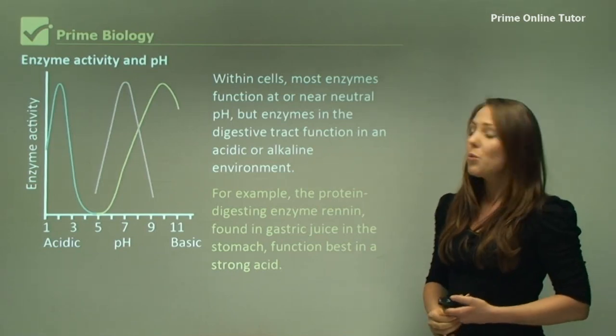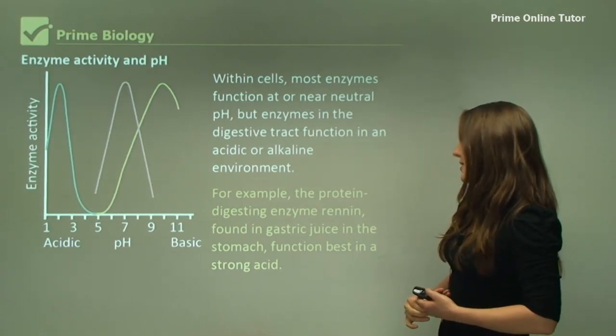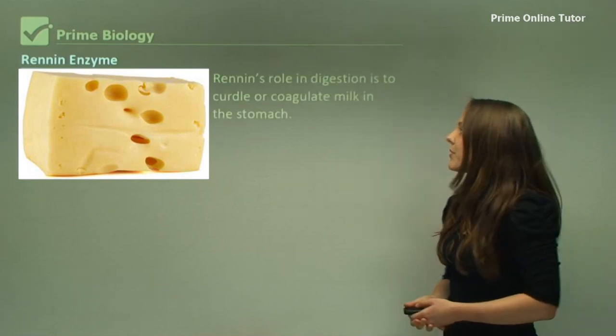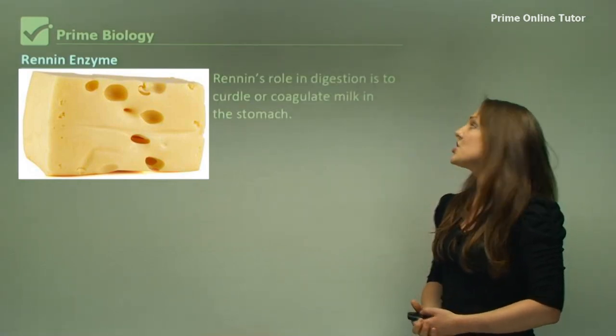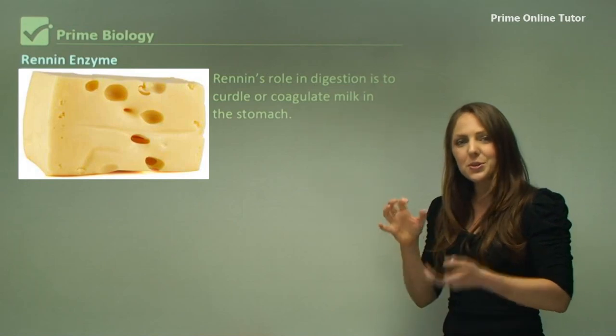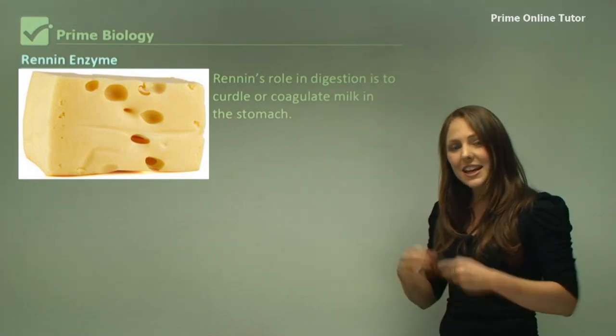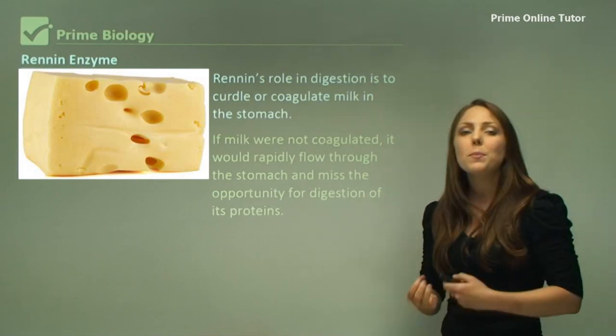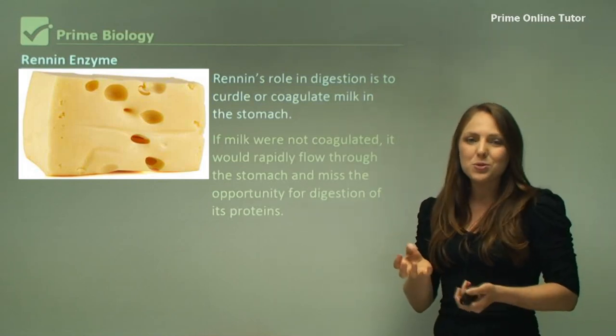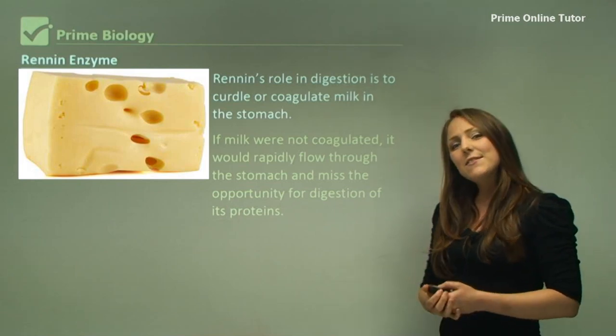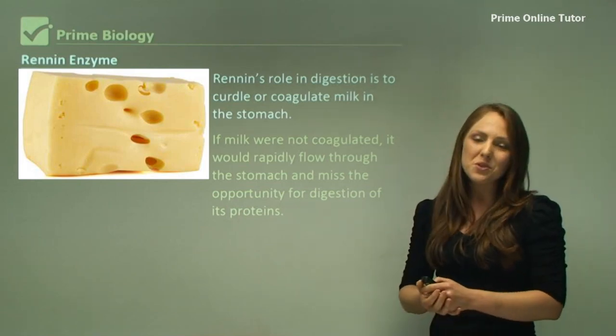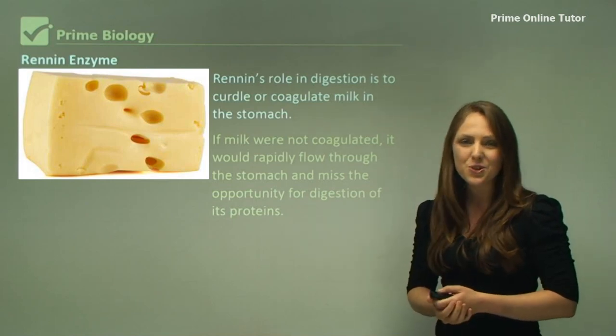The protein digestive enzyme rennin, which is found in gastric juice in the stomach, functions best at a strong acid. Rennin's role in digestion is to curdle or coagulate milk. So what it's actually doing in the stomach is turning milk, a liquid, into a solid. The purpose of this is so that you're able to absorb all the nutrients in that solid. If it were to stay as a liquid, the liquid would pass through the body and you wouldn't be able to absorb the proteins and nutrients from the milk.